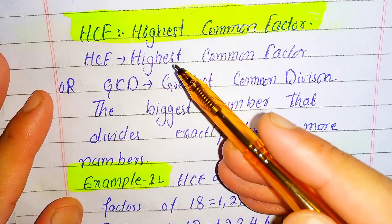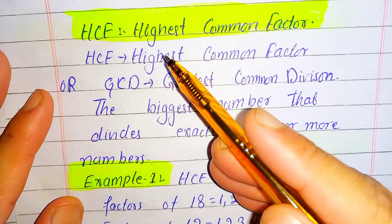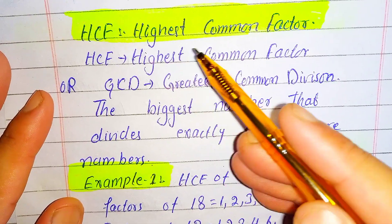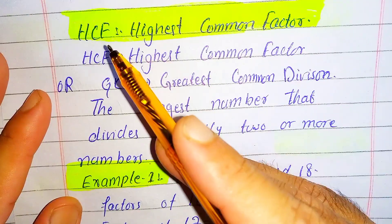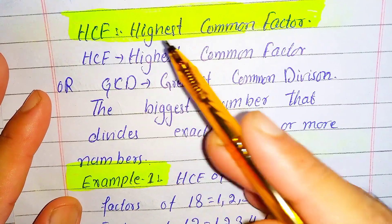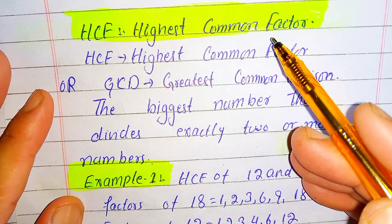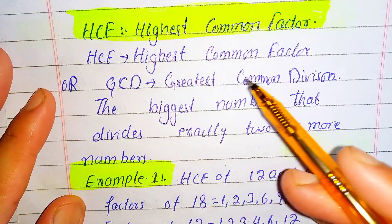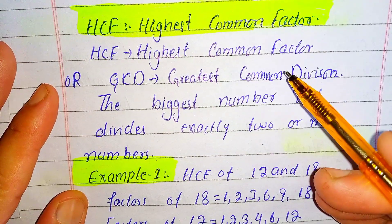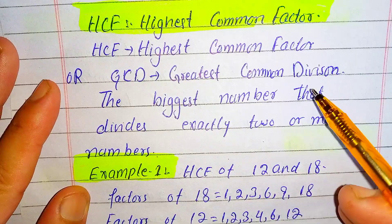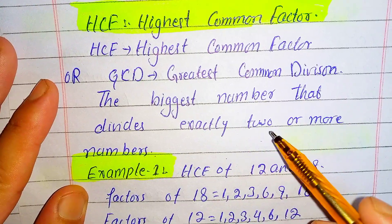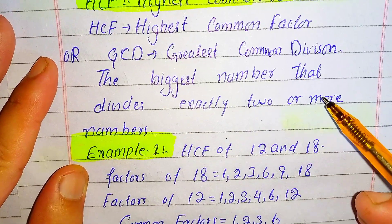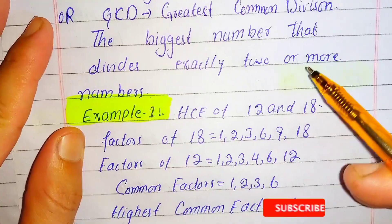Now we are going to talk about HCF, or Highest Common Factor. HCF stands for Highest Common Factor, also known as Greatest Common Divisor. It is the biggest number that divides exactly into two or more numbers.